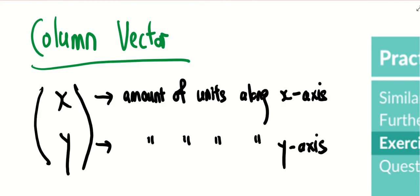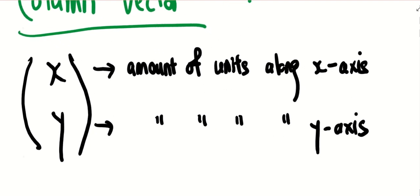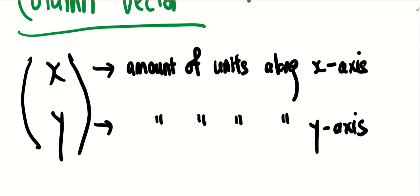Column vector is an extension from what you learned in matrix itself. But in this chapter, your column vector will only be a 2 by 1 matrix. The number on top in the column vector will tell you the number of units along the x-axis. If it's positive 4, I'm moving 4 units to the right side. If it's negative 4, I'm moving 4 units to the left. Likewise, for the number below. If the number is 2, it means I'm moving 2 units up. If it's negative 2, I'm moving 2 units down.